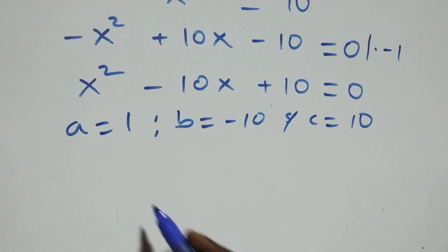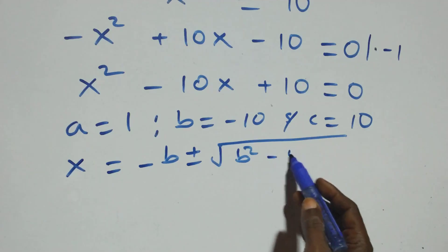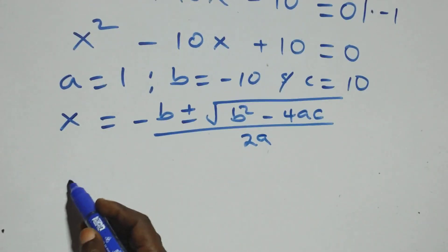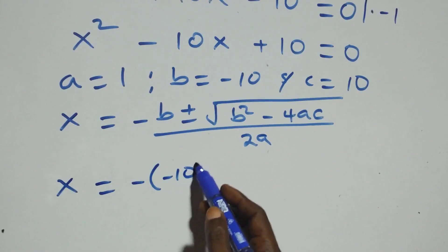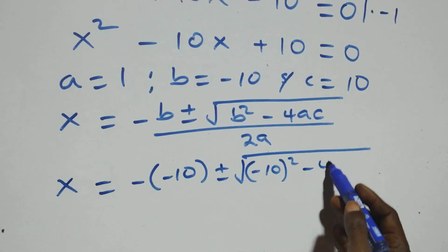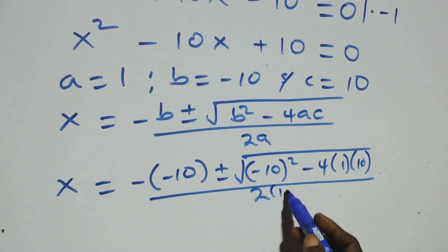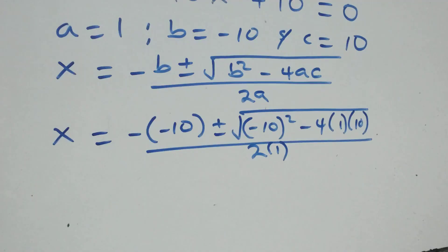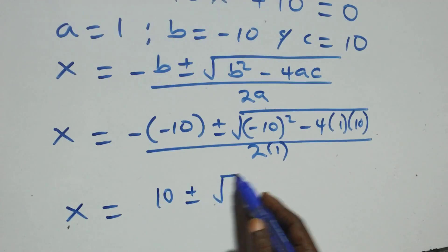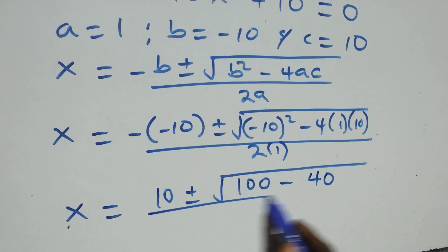We apply the quadratic formula: x equals minus b plus or minus the square root of b squared minus 4ac, all over 2a. Substituting, this becomes x equals minus (minus 10) plus or minus the square root of (minus 10) squared minus 4 times 1 times 10, over 2a — that is, 100 minus 40.